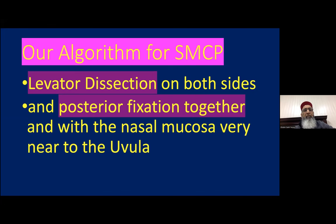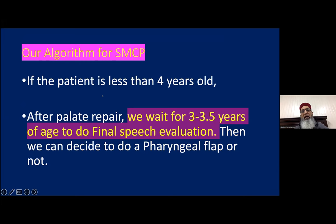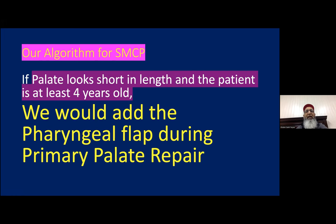If we simply suture the muscles together without fixing them to the nasal mucosa near the uvula, the muscles will shift anteriorly. If the patient is less than 4 years and the palate looks short, we do posterior lengthening just anterior to the uvula, then fix the levator to the most posterior midline position near the new uvula. We wait until 3 to 3.5 years for final speech evaluation to decide if further intervention is needed. If the palate looks short and the patient is already 4 years old, we add a pharyngeal flap during the primary repair.